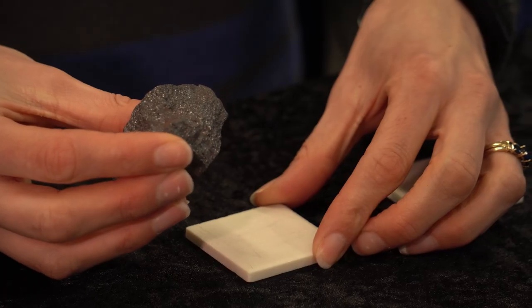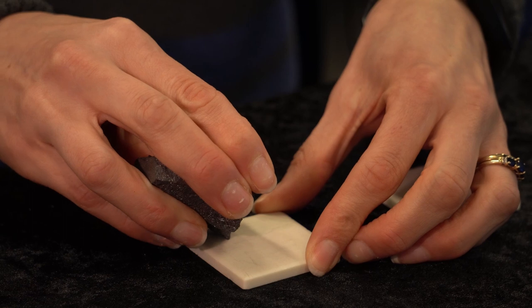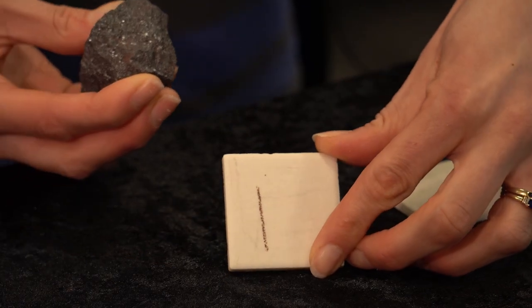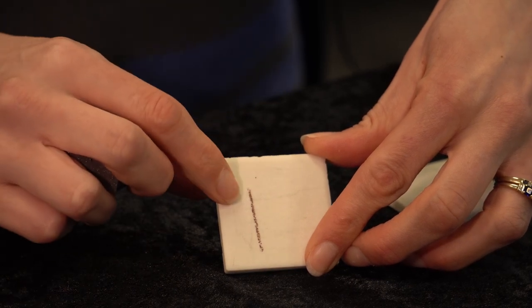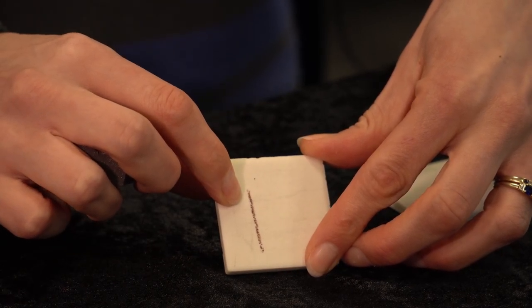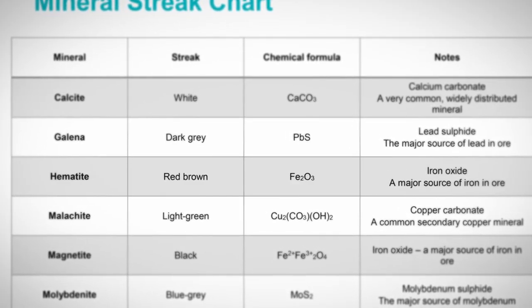Hold the streak plate firmly on the table and push the specimen across the streak plate, leaving behind the powdered mineral. You can see that this specimen has left a red-brown streak. I'll then look at my mineral streak identification chart and see that a red-brown streak suggests that this sample is haematite.